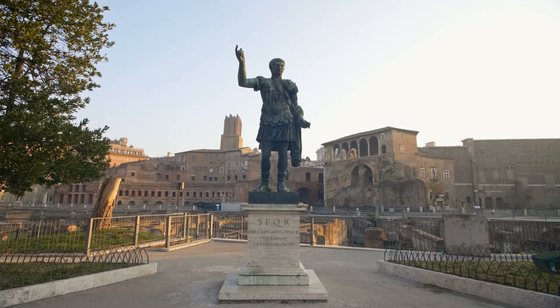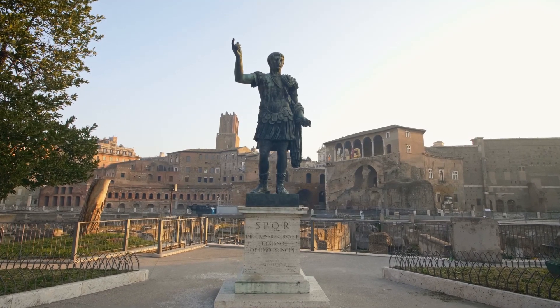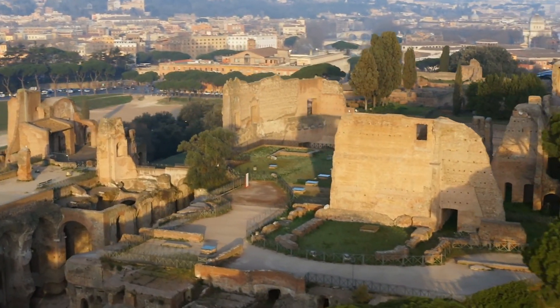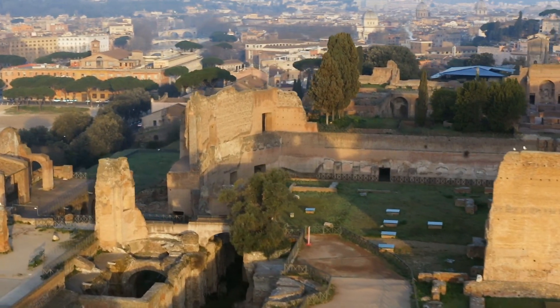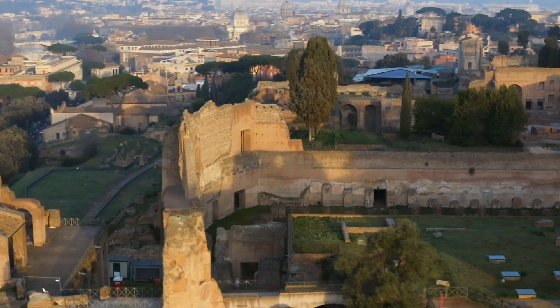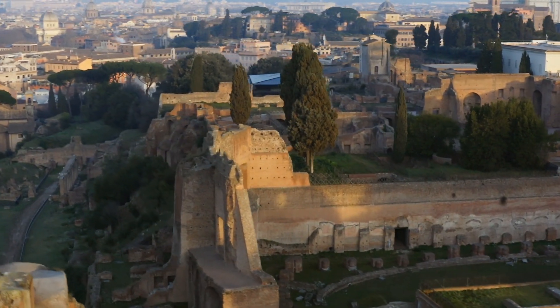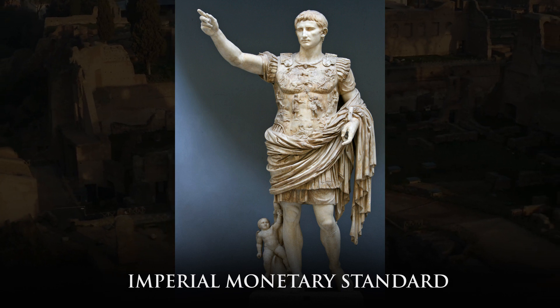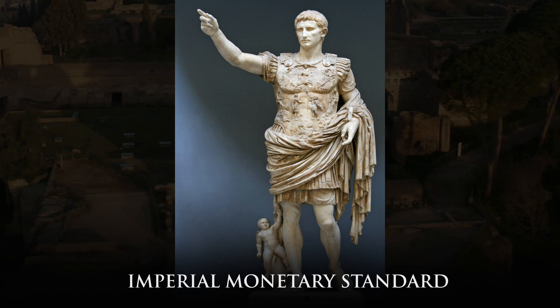Hi everyone! It's all about Roman coins once again. Having a very complex economy with many different things being bought and sold, the Romans had a very robust monetary system to allow that economy to move. And throughout their history of over a thousand years, the Romans used multiple different monetary standards. Today we'll explore the most famous of these, the Imperial Monetary Standard instituted by Augustus, which lasted for around 300 years and was notorious for its stability throughout the majority of those three centuries.